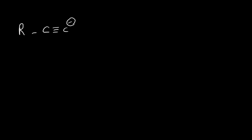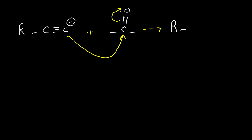Acetylide anions are strong nucleophiles and they can easily add to carbonyl compounds. So if you have a C double bond O — an aldehyde or ketone functional group — this negative carbon can easily attack it and push the pi bond to the oxygen. As a result we have this intermediate and oxygen has a negative charge.